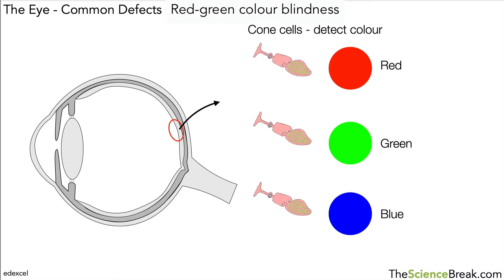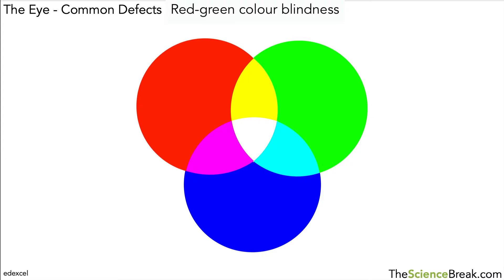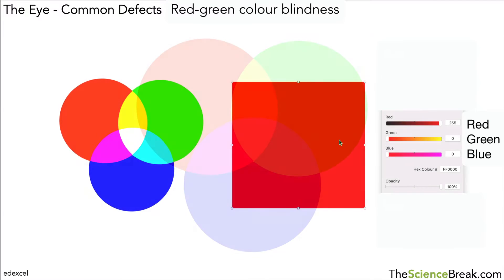Now we don't just see red, green and blue in our everyday lives if the eyes are working normally. We see lots of different colours. So how do we see all these different colours that are possible? Well if we mix up some of these colours — the reds, the greens and the blues — you can see we get different colours as well. So we can mix those three colours and get a range of different colours.